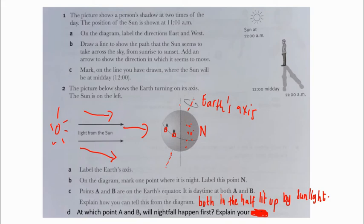When it turns to the left, from A and B which one will face the night first? That would be B. B will reach the night first, so the answer is B.